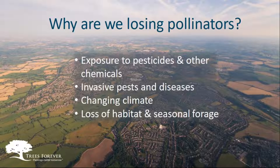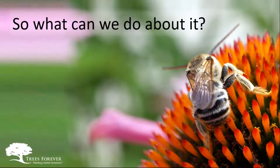Why exactly are we seeing these declines in pollinator numbers? There are many, many factors. Certainly, loss of habitat and seasonal forage is a concern. There's also exposure to pesticides and other chemicals, invasive pests and disease, and if we look at the overall changing climate, this means a changing landscape. Some pollinators have very intimate relationships with specific plants, so we need to keep specific pollinators, specific plants, and their habitats in mind for the long run. The most famous example is the monarch, which is so reliant on milkweed — common milkweed certainly, but others as well.